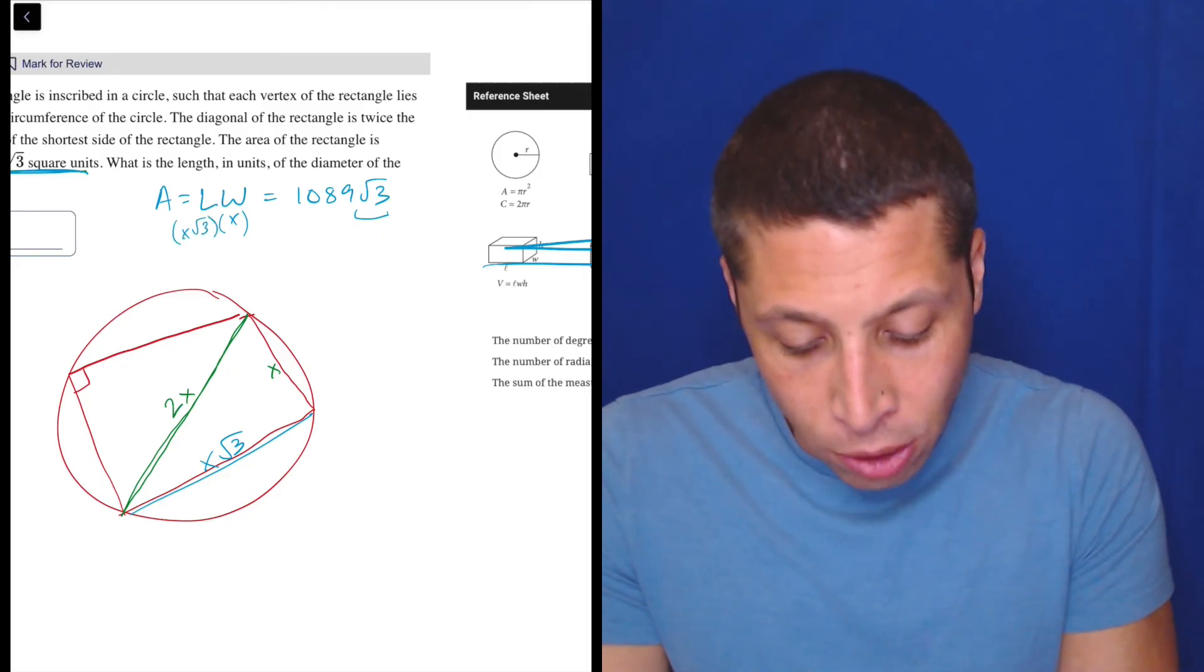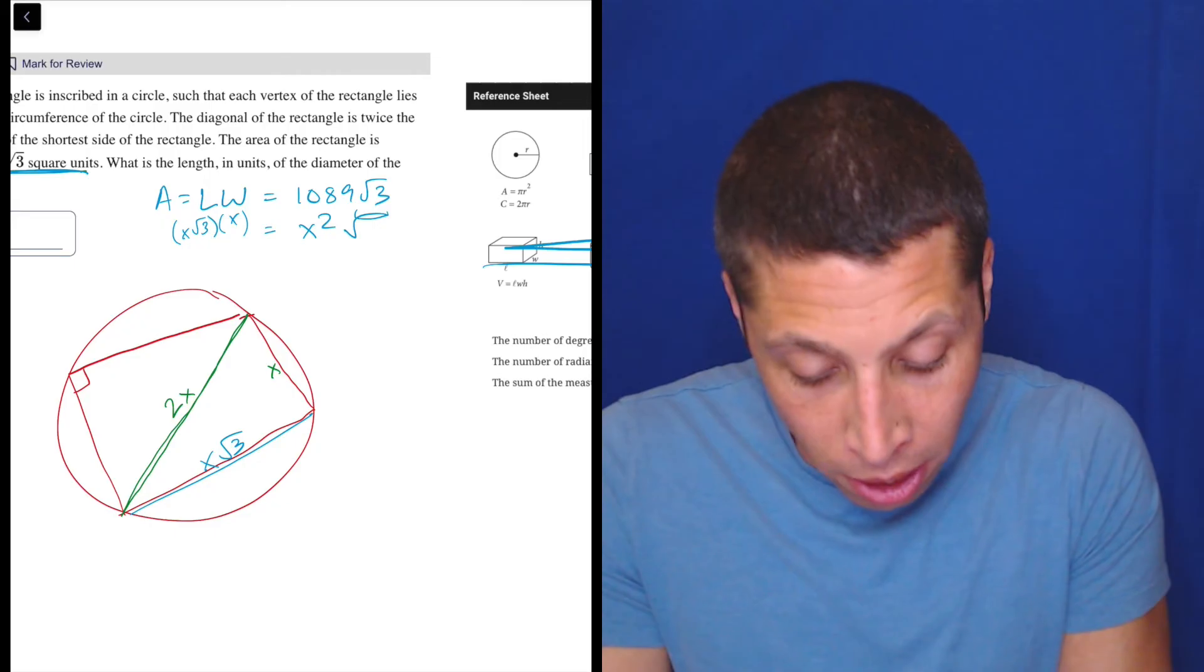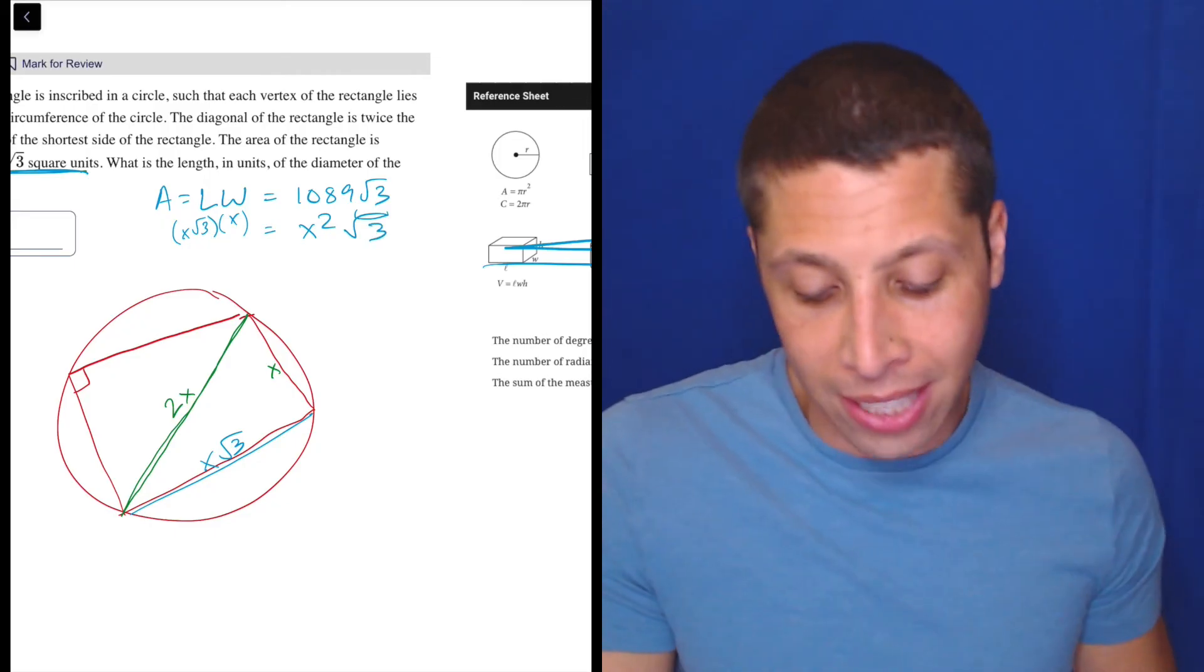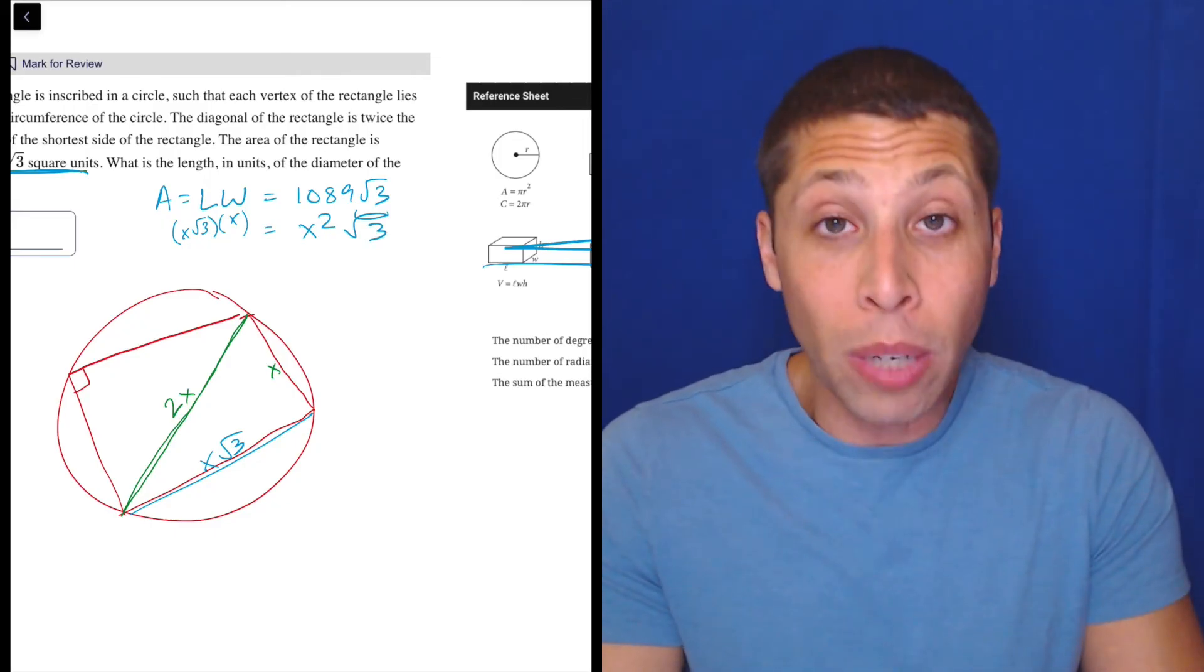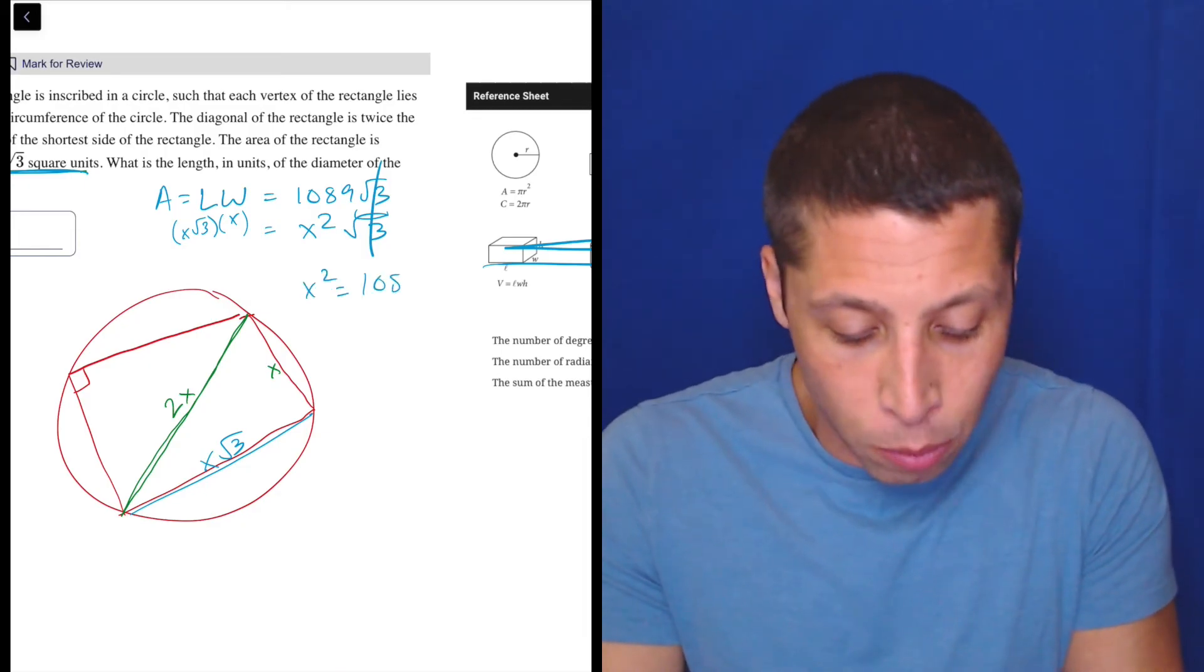And that is easy to then compare to the 1089 root 3. So that's going to be x squared root 3, right? So if I multiply those things together, I get x squared root 3. So the root 3 that looks scary doesn't even matter here. I just have that x squared is equal to 1089.